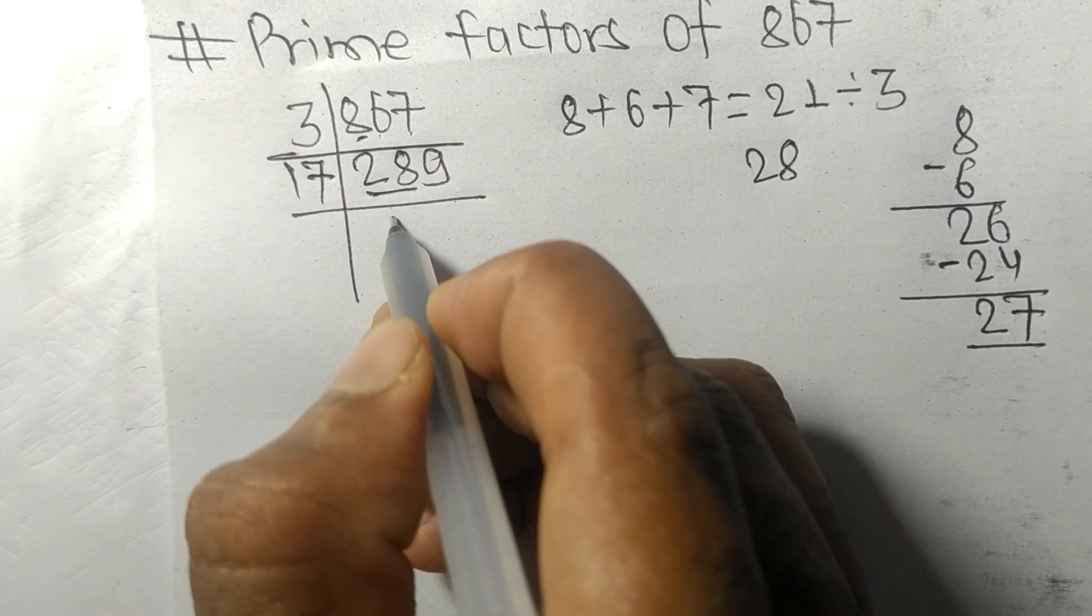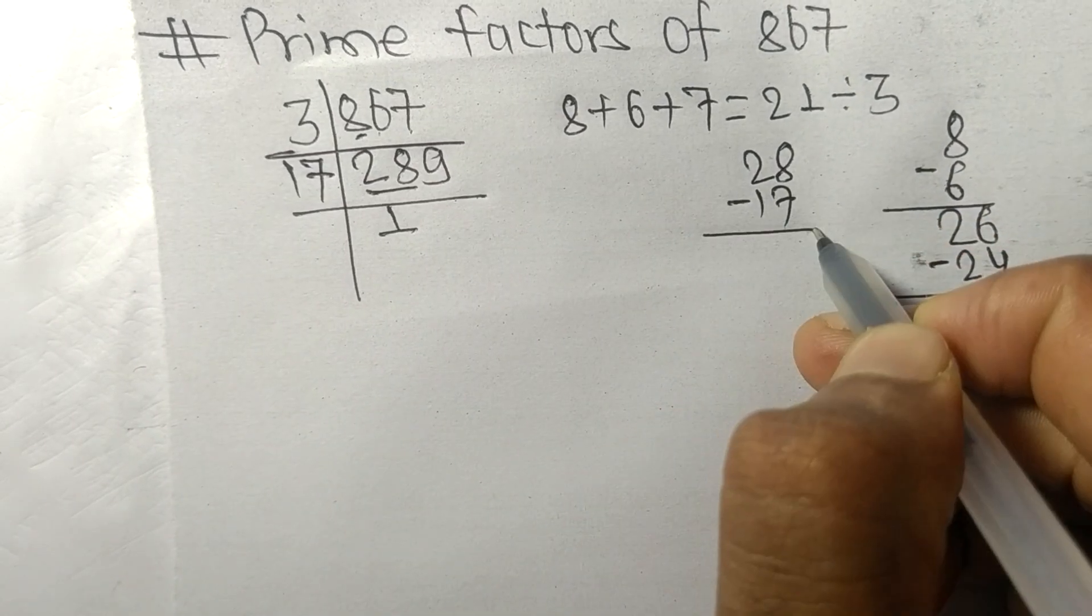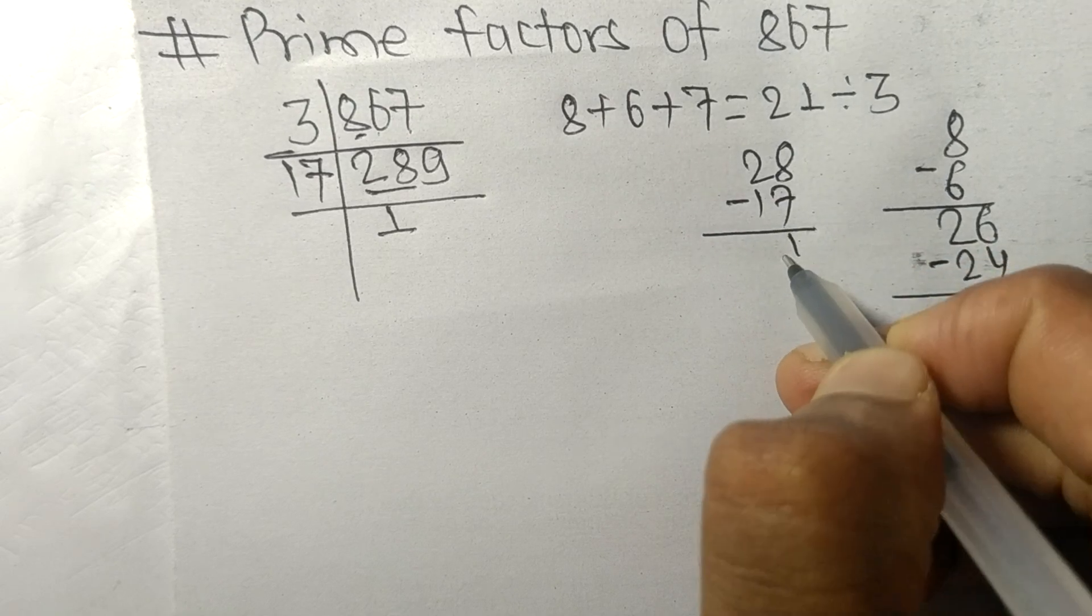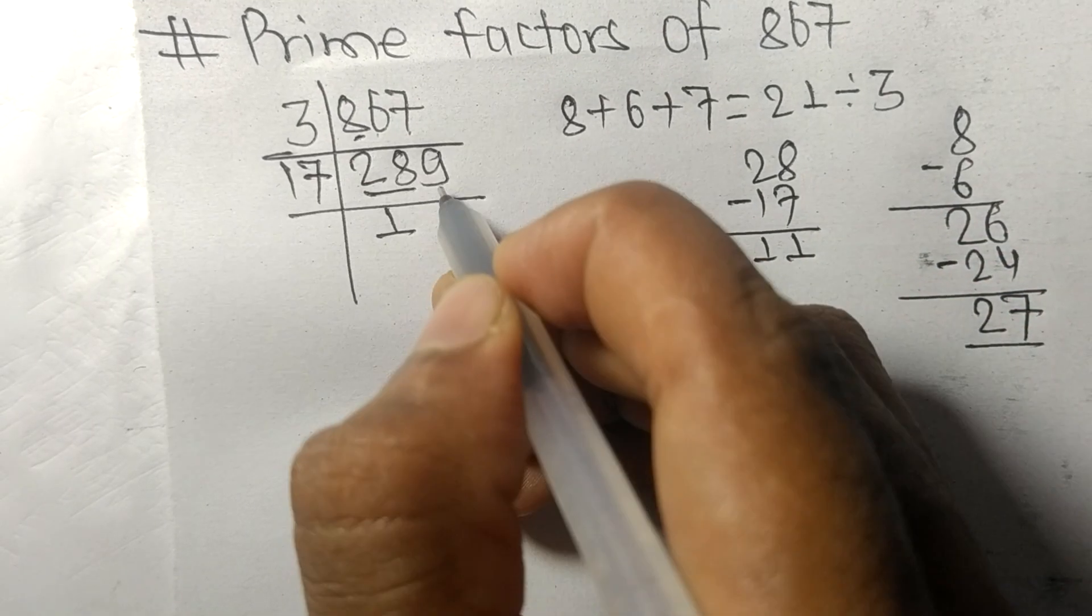17 times 1 is 17. On subtracting, 8 minus 7 is 1, 2 minus 1 is 1, so we got 11. This 9 becomes 119.